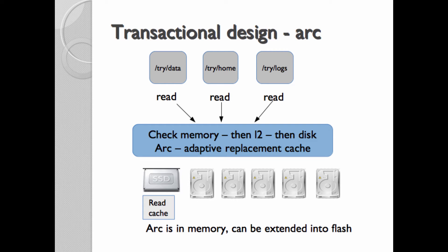ZFS will use all the memory you give it, so give it plenty. I've seen systems with multiple terabytes of memory where there's a curve at the top end — it depends on CPU and disk and everything else. You may see advice online like 'one gigabyte of memory per terabyte of disk' — that's a bit extreme. The cache is very adaptive, and there are settings you can tweak. With 32 gig of memory and 500 terabytes of disk, you can make it work.